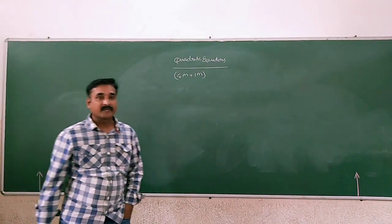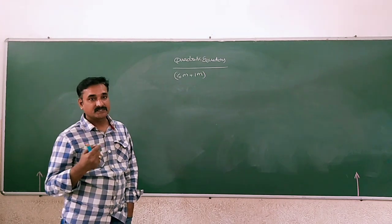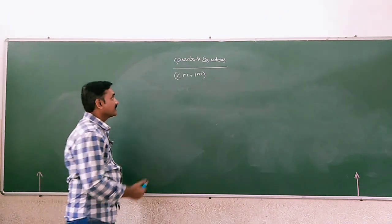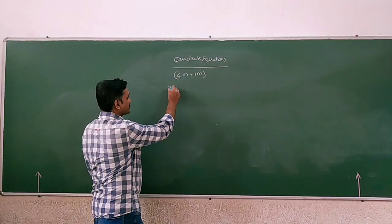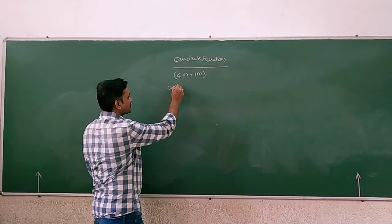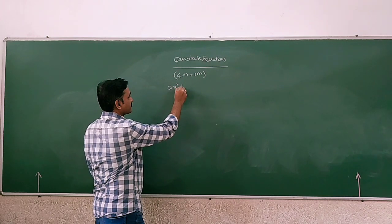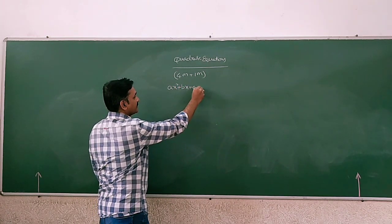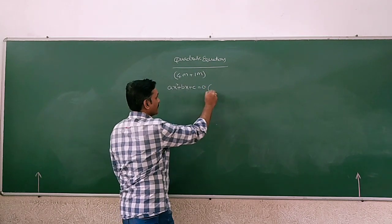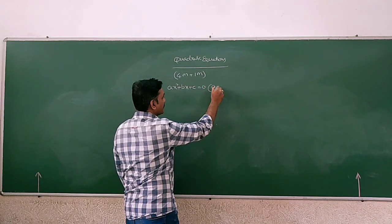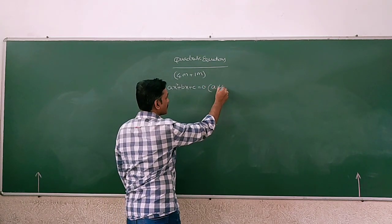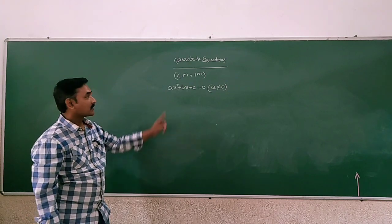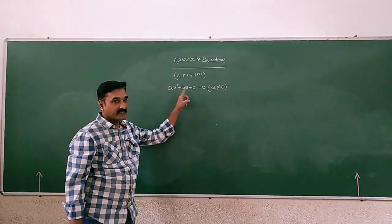So what are the topics, what are the concepts involved in this, what we have to do? The general form of the quadratic equation is Ax² plus Bx plus C equals to 0, where A is not equal to 0. This is called the quadratic equation.